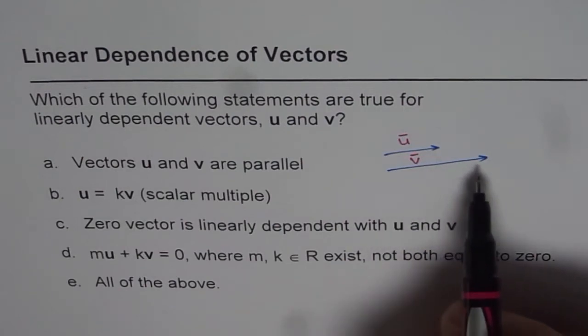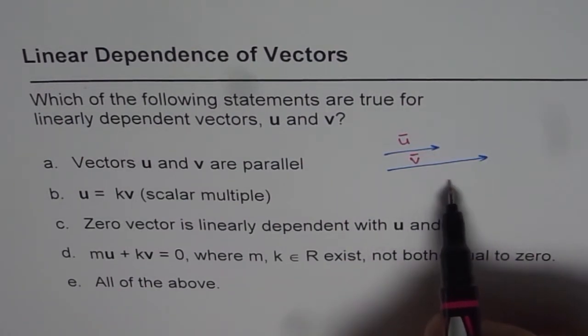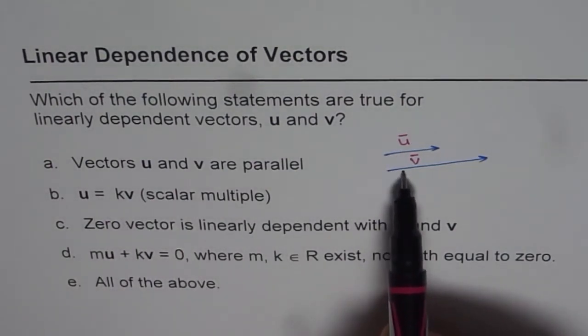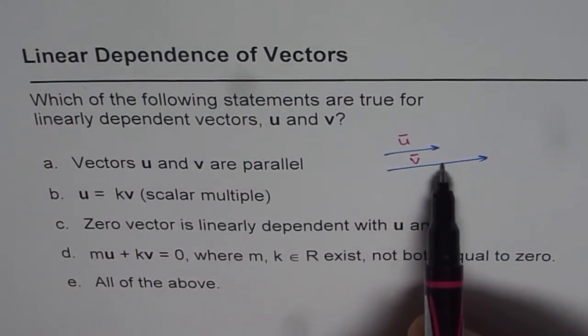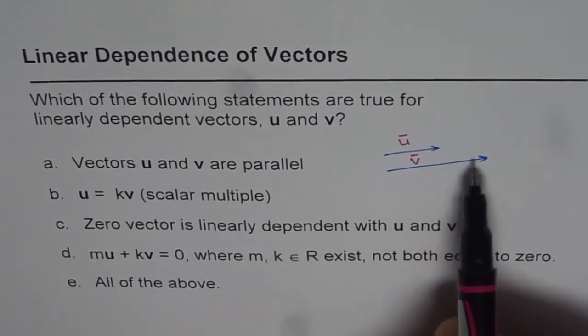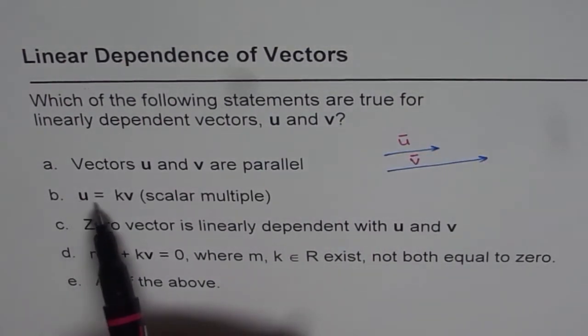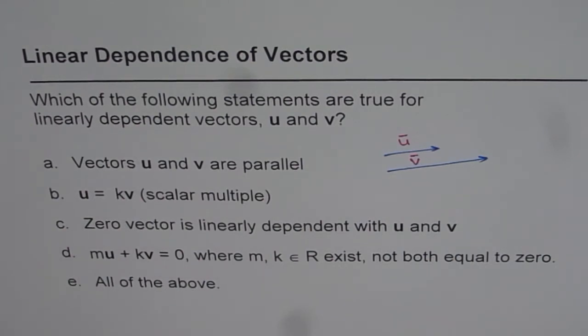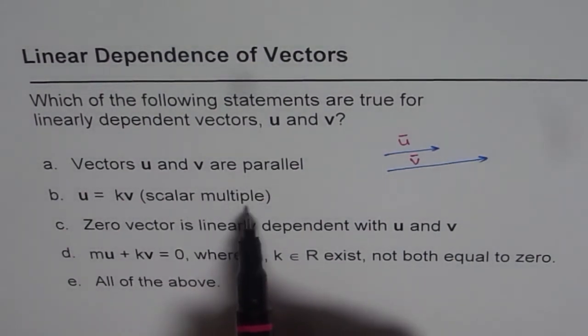When vectors are linearly dependent, we can write one in terms of another as a scalar multiple. You can always translate u on this side. Now u is, let us say two-third of v, something like that. u equals to k times v, where k is any real number. That is a scalar multiple property.